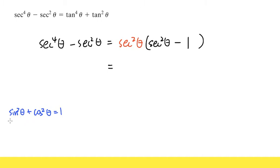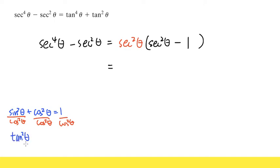This is called the Pythagorean identity for sine and cosine, but we also have versions for tangent and secant. To produce tangent or secant, we divide everything by cosine squared theta. For the first term, sine theta over cosine theta is tangent theta, and since both are squared, we get tangent squared theta. The second term becomes plus one. On the right side, one over cosine squared theta gives us secant squared theta. So we have: tangent squared theta plus one equals secant squared theta.